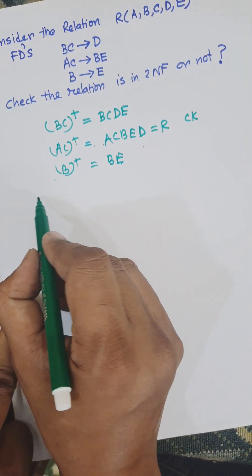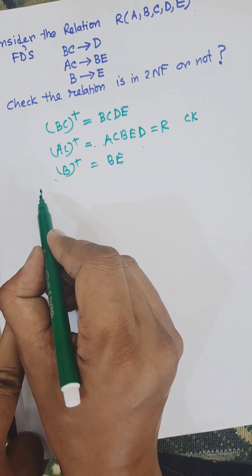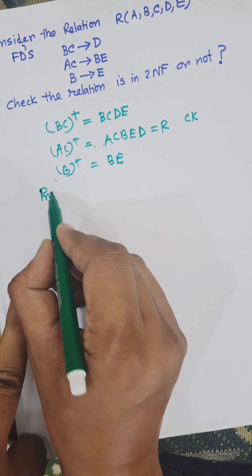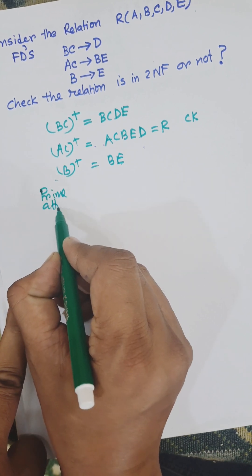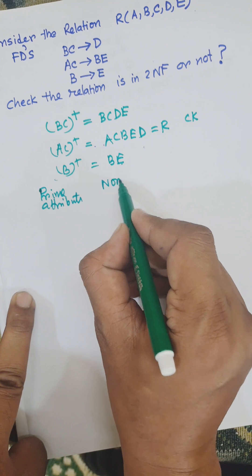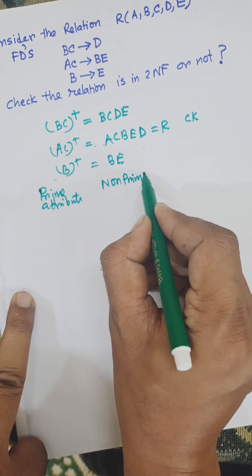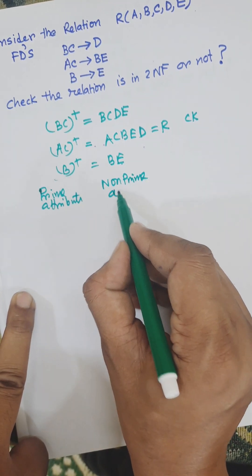Now consider a table with columns for prime attributes and non-prime attributes. Prime attributes are those that belong to the candidate key.